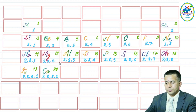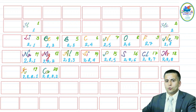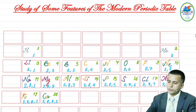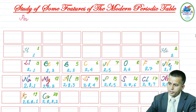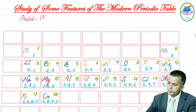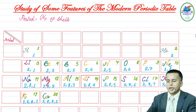Before we move on to periodic properties, let us understand how the period number and group number are assigned in the modern periodic table. A period in the modern periodic table refers to the number of shells present in an atom of an element. In the case of hydrogen and helium, there is only one shell — the K shell.